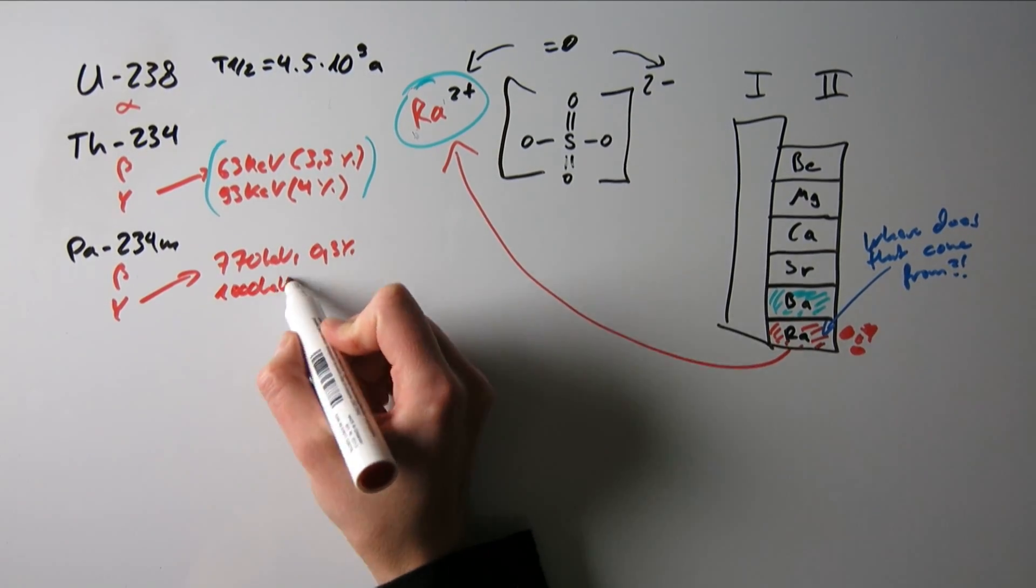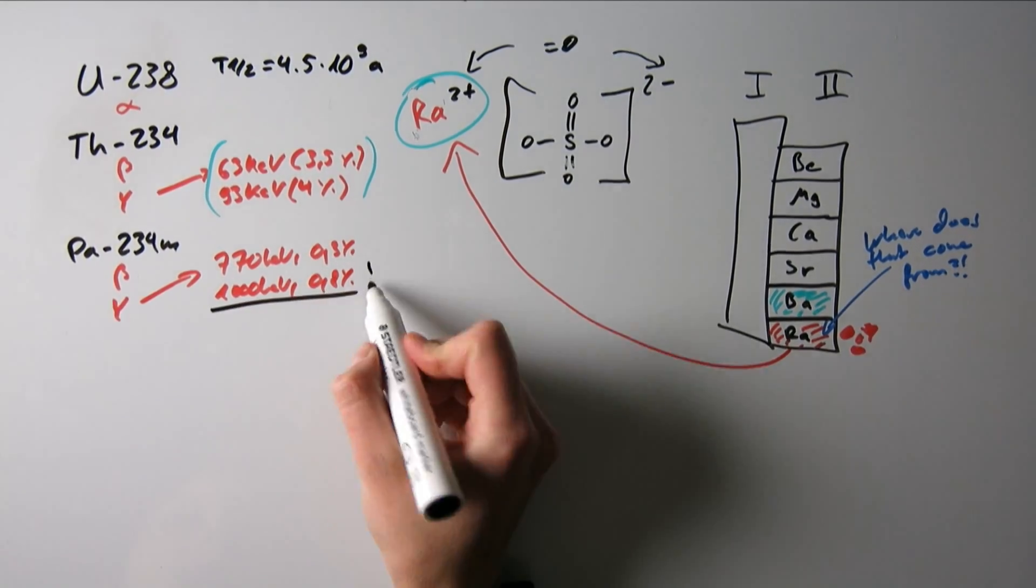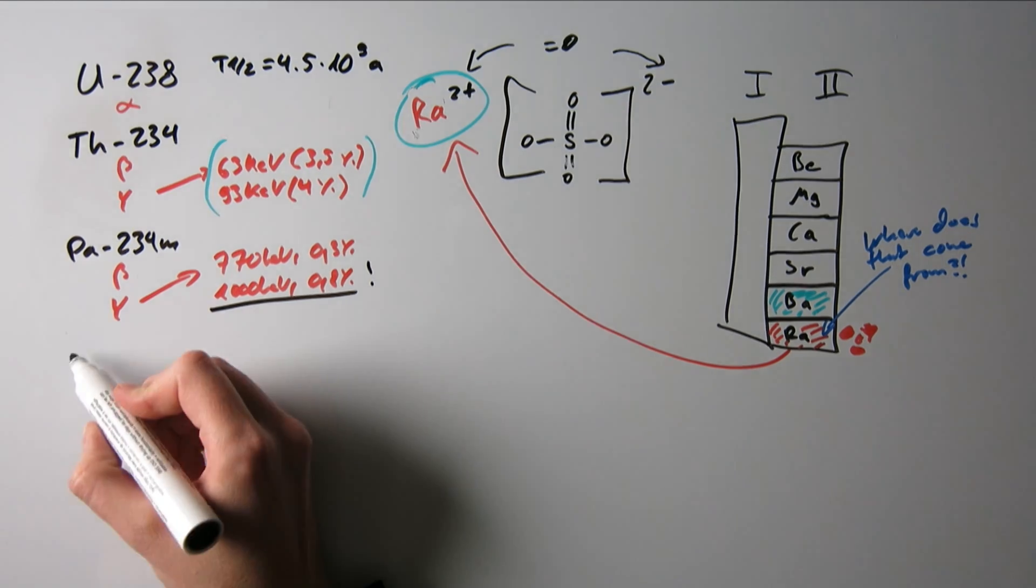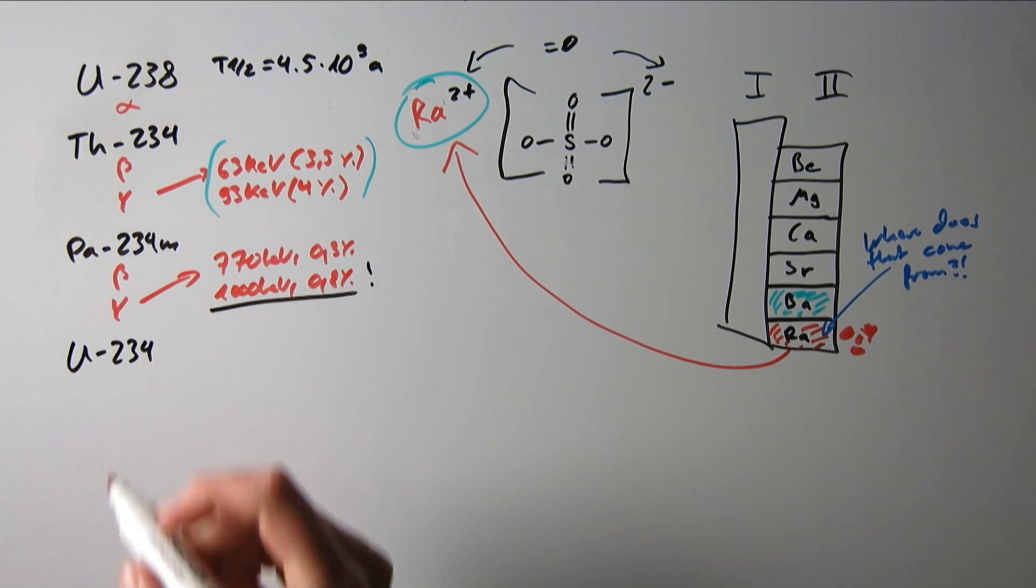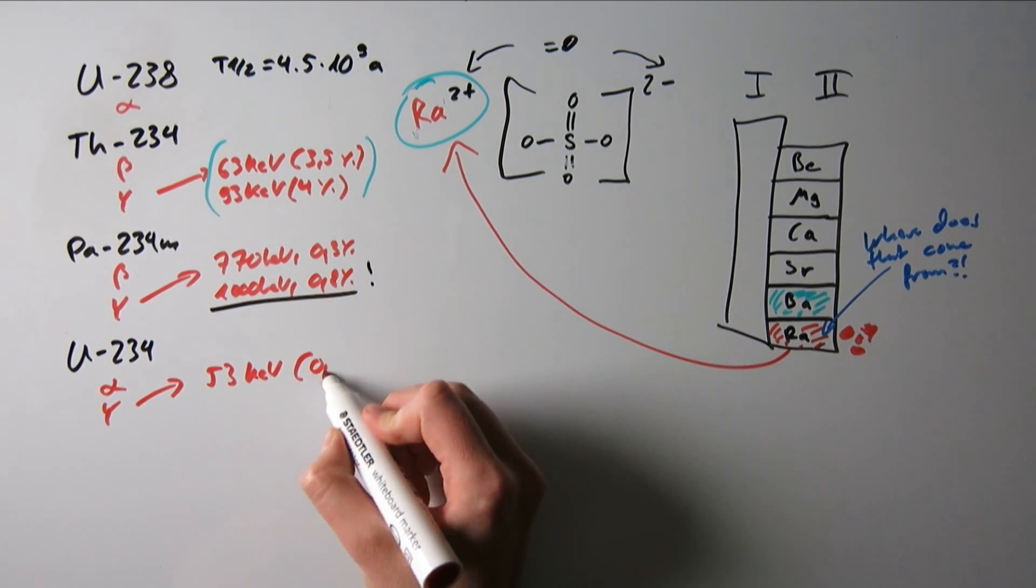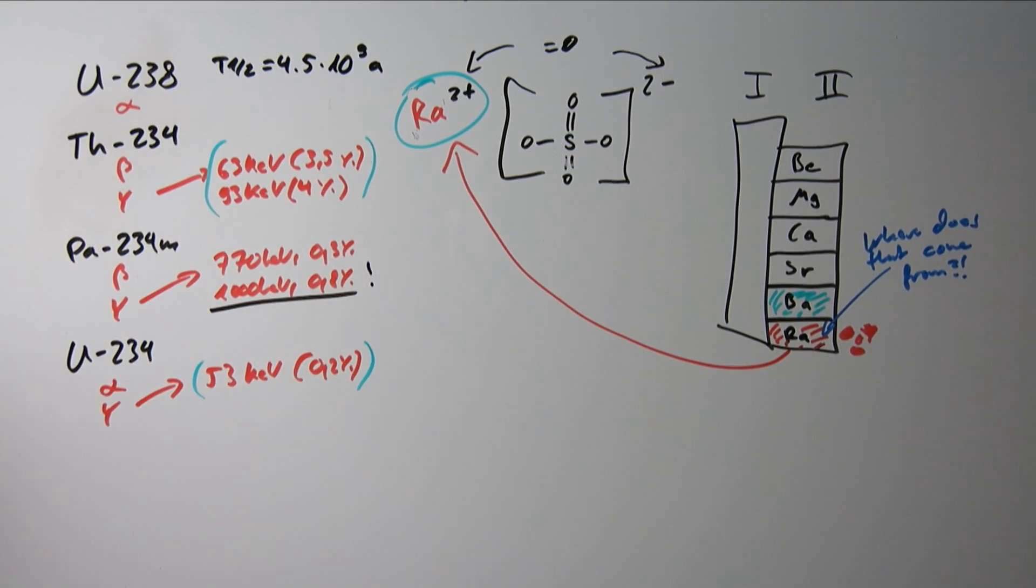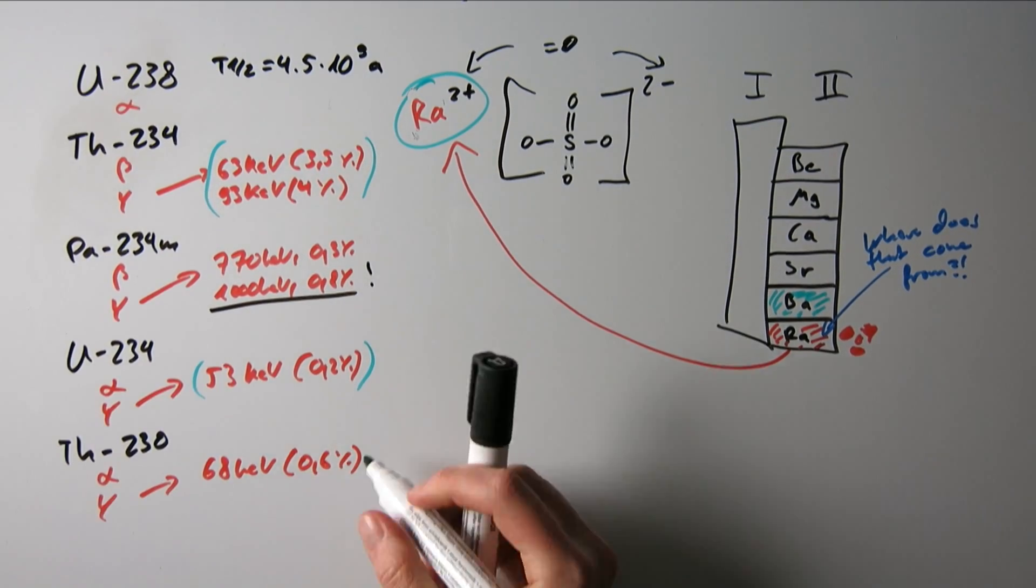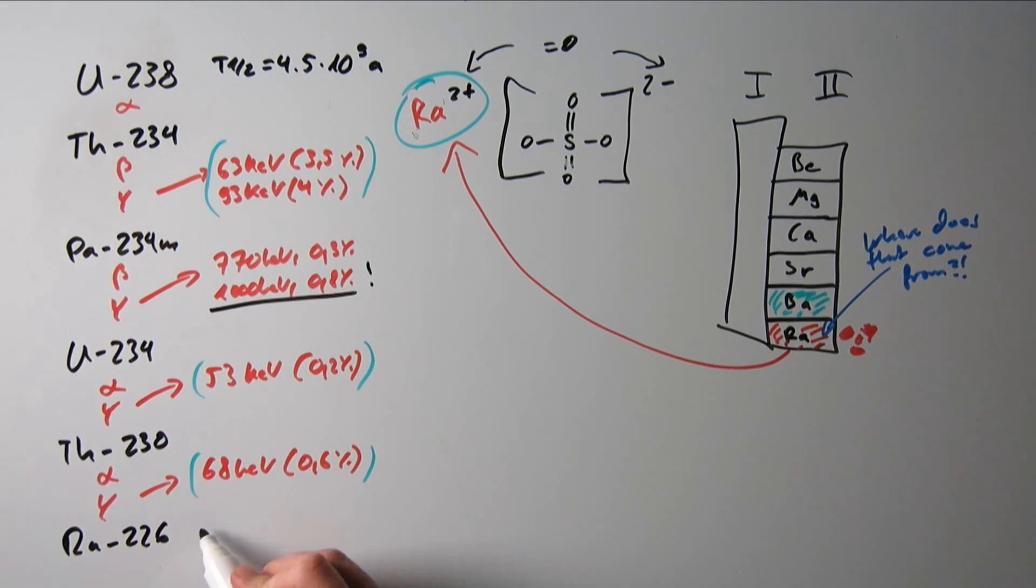Now this isotope, protactinium-234, has a nice line at 1000 keV with an emission probability of 0.8%, so that will actually indirectly allow us to see that there's some uranium in there and we're dealing with uranium ore. And then there is another uranium isotope down the decay chain, another thorium isotope, and finally we're ending up with radium-226. So that's where it comes from.